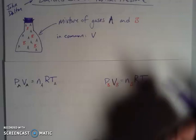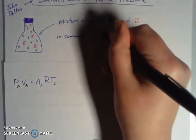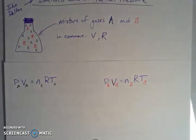What else will be the same for PV equals NRT? Well, R, of course, because it's a constant. It's a universal gas constant, so it's going to be the same for A and B.